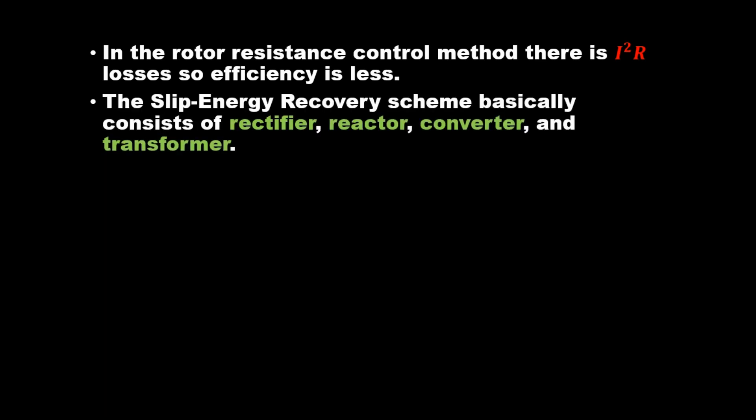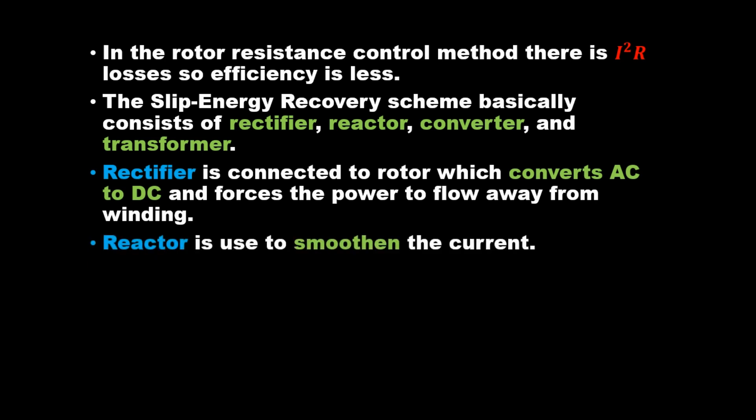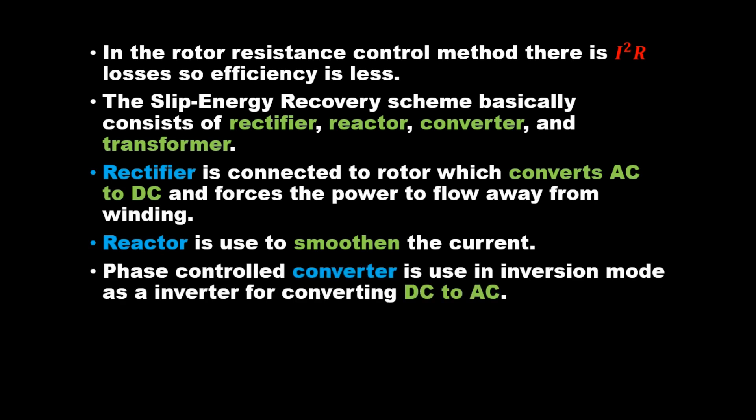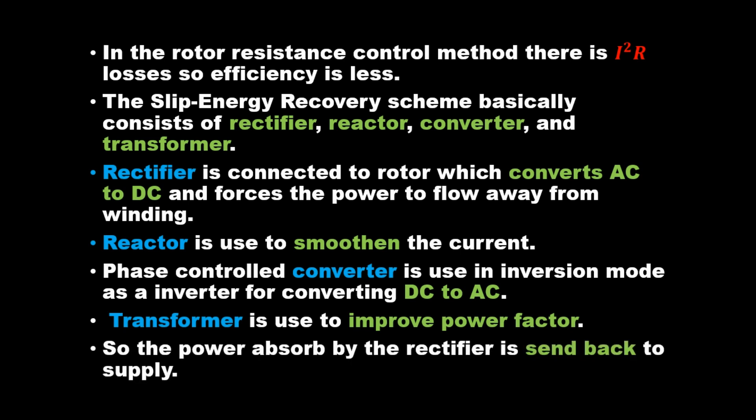The slip energy recovery scheme consists of a rectifier, reactor, converter, and transformer. The rectifier is connected to the rotor and converts AC to DC, forcing power to flow away from the winding. The reactor smoothens the current. The phase-controlled converter operates as an inverter, converting DC back to AC. The transformer improves power factor. So the power absorbed by the rectifier is sent back to the supply.